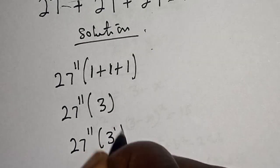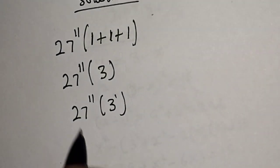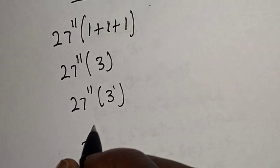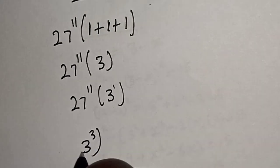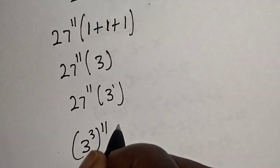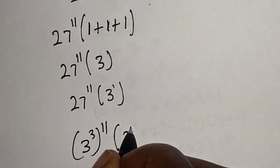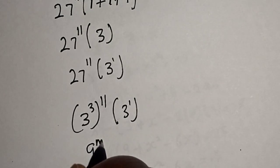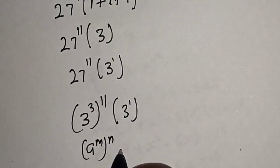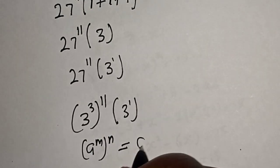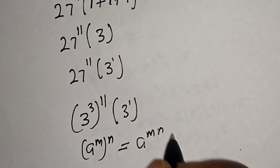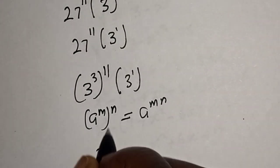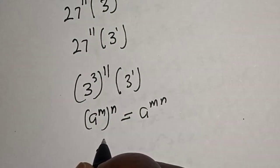Then we have 27 raised to power 11, bracket 3 raised to power 1. Now 27 can be written as 3 raised to power 3, raised to power 11, multiplied by 3 raised to power 1. If you have a raised to power m, raised to power n, this is equal to a raised to power m times n. Now we have 3 raised to power 11 times 3, that is 33.